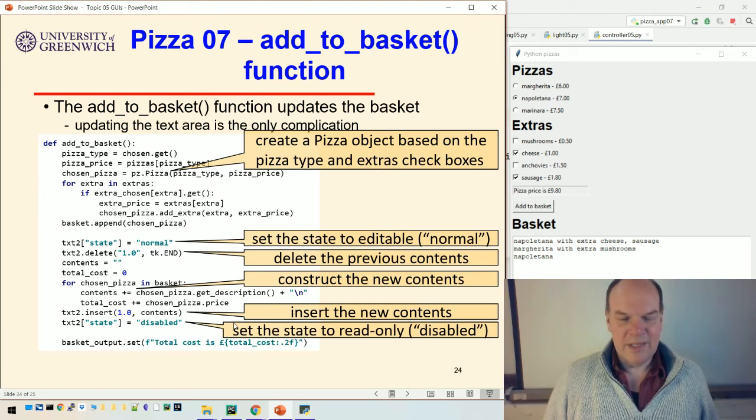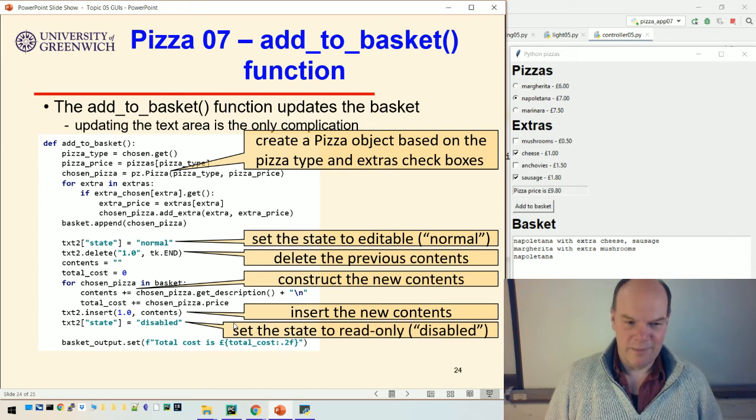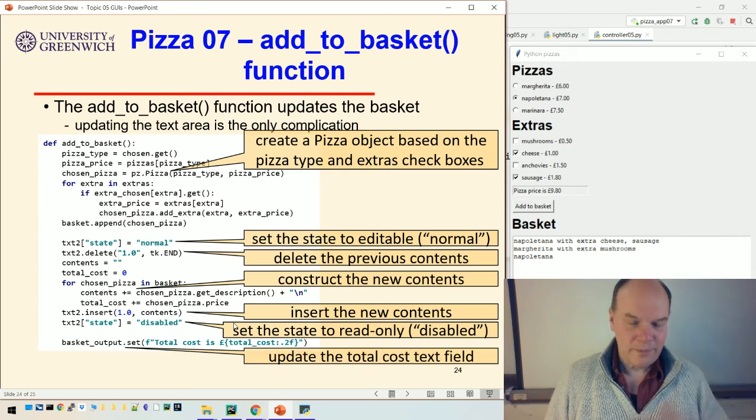So that bit of code. As I say, updating these text areas is not necessarily very obvious how to do it. But that's how you do it. Usually you delete the text that's in there and then insert the new text. That's the easiest way. There are other ways, you can append text on the end, but it's easier to do it like this. And then finally, the output is much easier because that's just controlled by a single variable. We can update that text field.